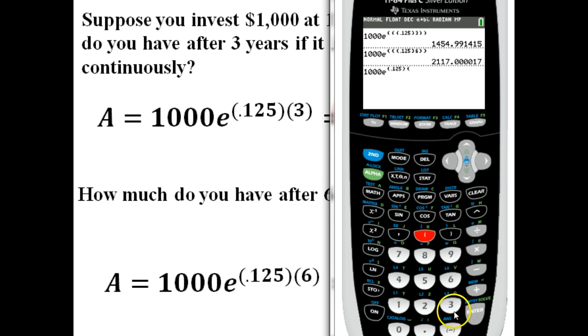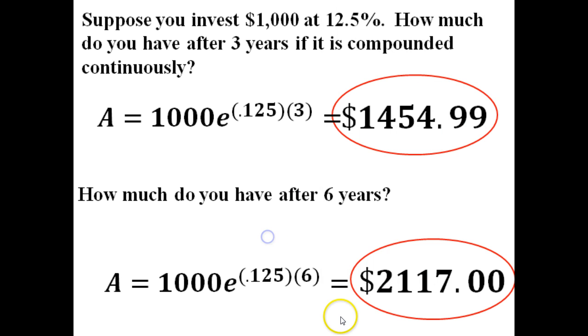close parenthesis, open parenthesis, three. That's really all you have to type it in, just like it appears. Whoops, not three. I'm supposed to use six, sorry. I'll use six, and then just hit enter. That's your $2,117. And that's your answer.